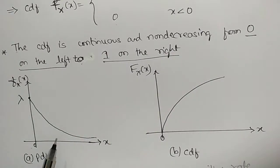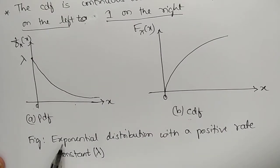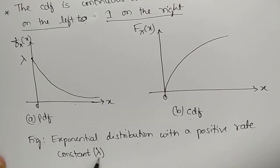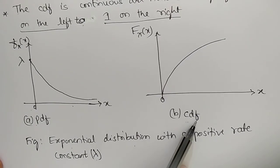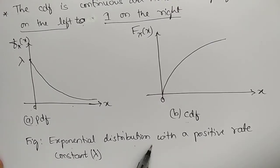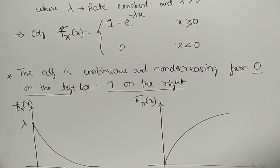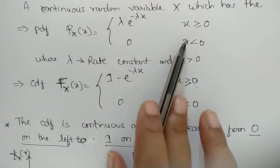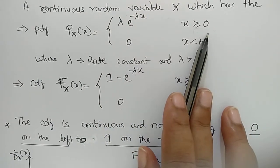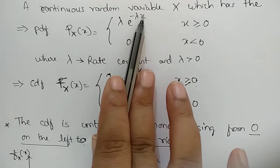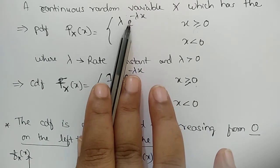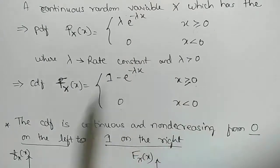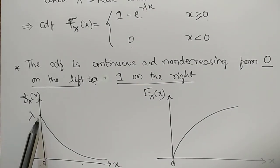We will understand this by looking at the graphs. Figure (a) shows the probability density function of the exponential distribution with a positive rate constant. Substituting x = 0 into the pdf equation λe^(−λx), we get λ × e^0 = λ × 1 = λ. So the maximum magnitude of the pdf occurs at x = 0 and equals λ.